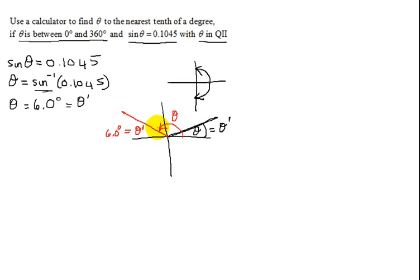Now, to find angle theta, all I have to do is look at the picture. I can tell the angle from the positive axis to the negative x-axis is 180. And then all I have to do is subtract 6 degrees to get the angle I want.